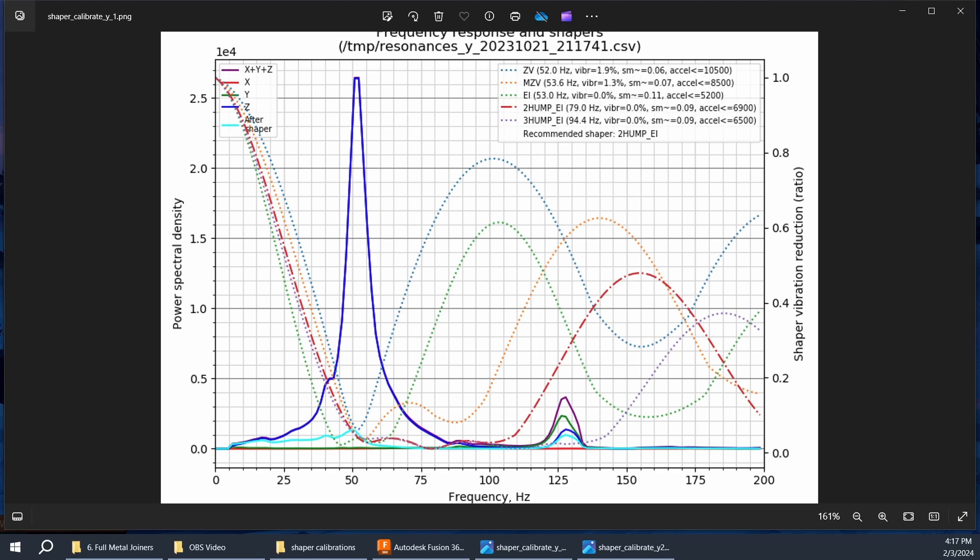So now this is what we're looking for here. This is my previous input shaper chart for the Y axis. These aluminum joiners basically should, in theory, only affect the Y axis. They shouldn't make any difference to the X axis. That's going to be the other parts of your printer, including the rigidity and weight of your X carriage. This was the previous setup. I've got a 52 Hz resonance and a recommended acceleration of 10,500.